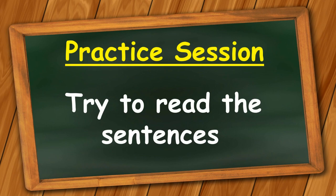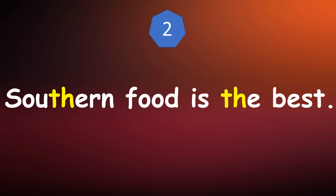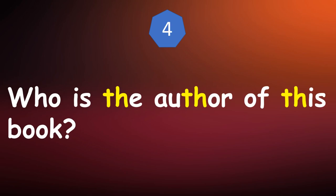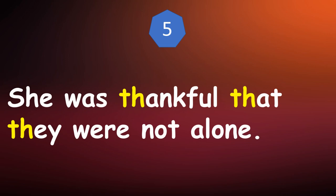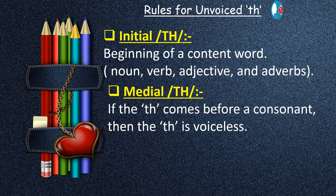Practice session — try to read the sentences, feel the rhythm and follow the beat. Sentence 1: 'Southern food is the best.' Sentence 2: 'There is nothing much to tell.' Sentence 3: 'Who is the author of this book?' Sentence 4: 'She was thankful that they were not alone.' Now a quick summary of rules: voiced TH at the beginning of function words; between two vowels; whenever there is TH plus UR sound or UR plus TH sound; verb plus E; and TH plus ING words. TH is always voiceless at the end of a word.